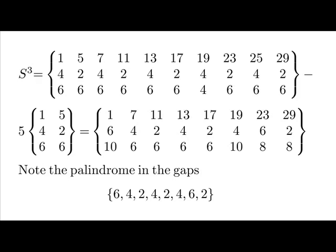Note the palindrome in the gaps: six, four, two, pivotal cousin, two, four, six, and the capping twin. It rarely gets as beautiful as this.